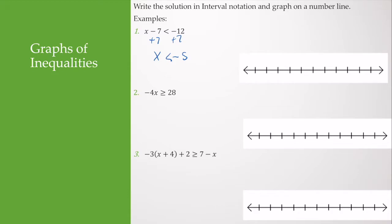This is a blank number line, so I'll pick here to be 0, then negative 1, negative 2, negative 3, negative 4, negative 5. I tend to give blank number lines on exams and quizzes, so label them yourself. So I have x is less than negative 5.